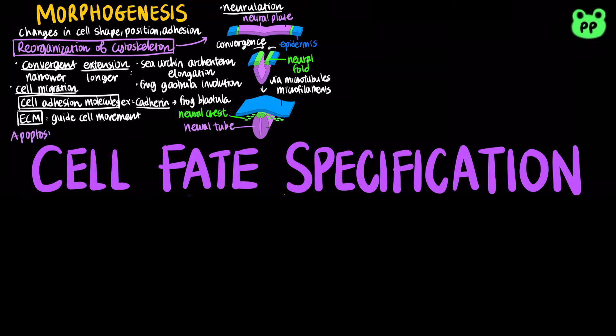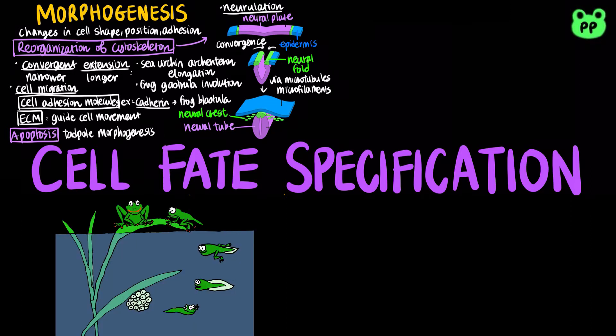A second mechanism of morphogenesis is apoptosis, or programmed cell death, which is involved in tadpole morphogenesis in frogs.